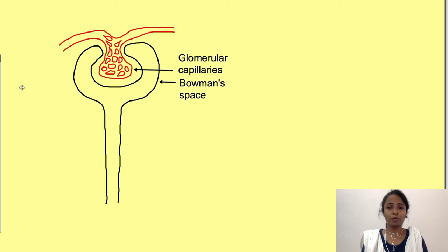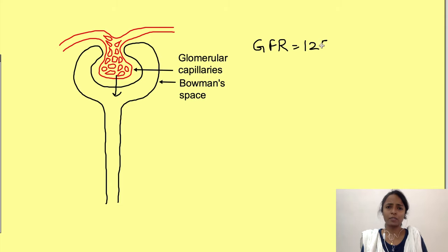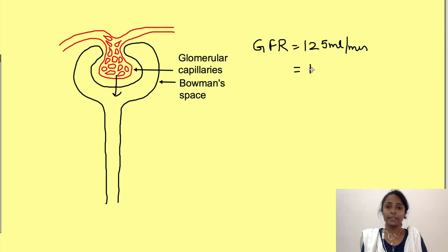The first step in formation of urine is ultrafiltration of plasma from glomerular capillaries into the tubules. The rate at which filtration of plasma occurs at the level of glomerular capillaries is known as glomerular filtration rate (GFR), and it is normally 125 ml per minute, or expressed per day, 180 liters per day.